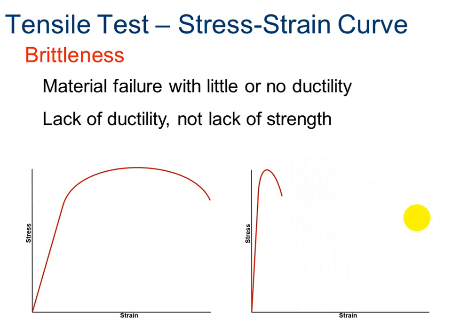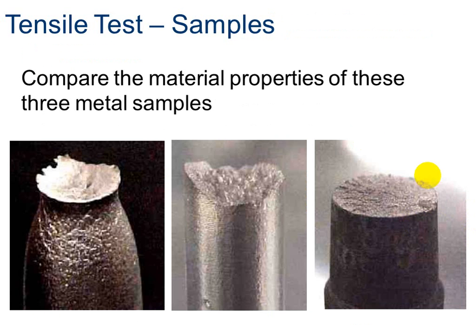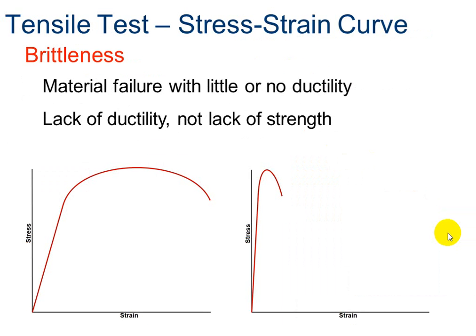Another thing we can see on a tensile test is brittleness — material failure with little or no ductility, as shown in this example here with no ductility. It's a lack of being ductile, not a lack of strength — it can still be a very strong metal, it's just not very ductile, meaning it will not stretch much beyond its load point.